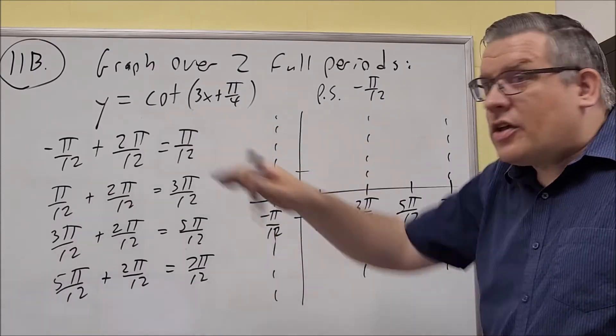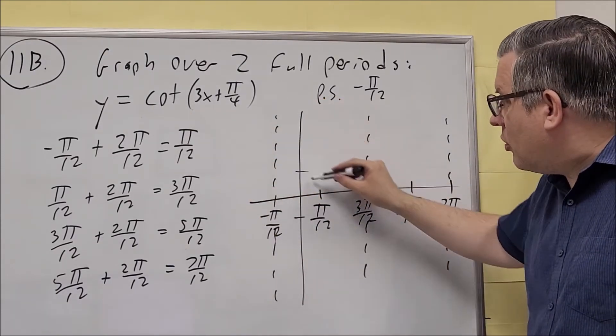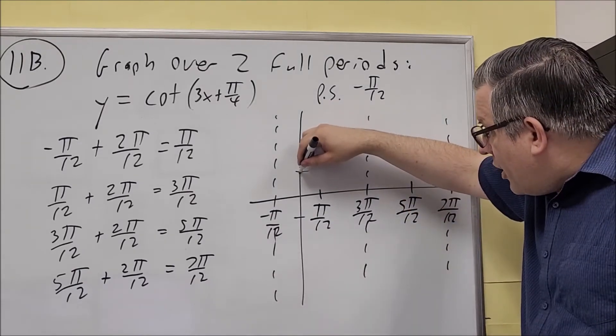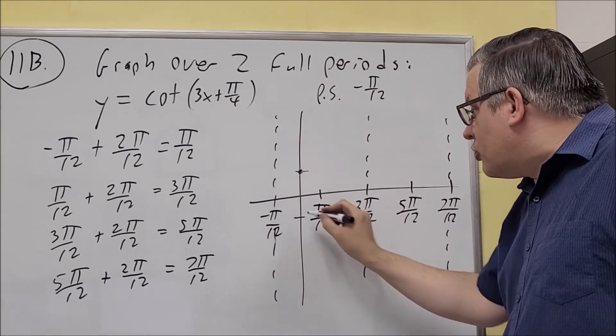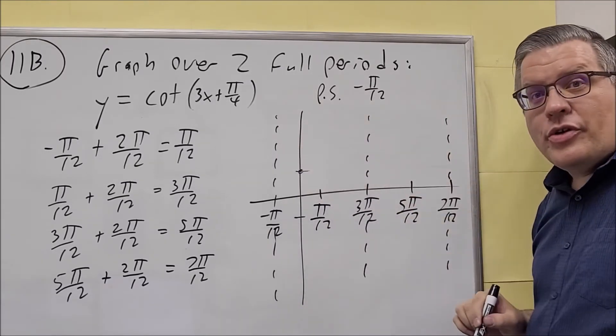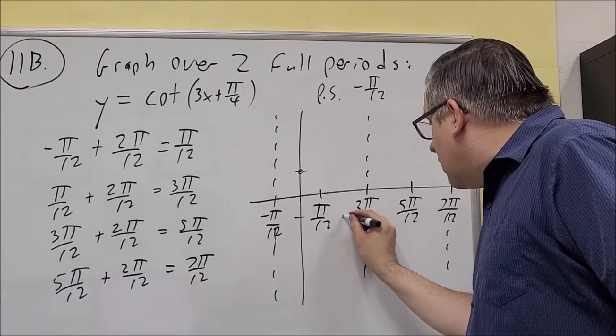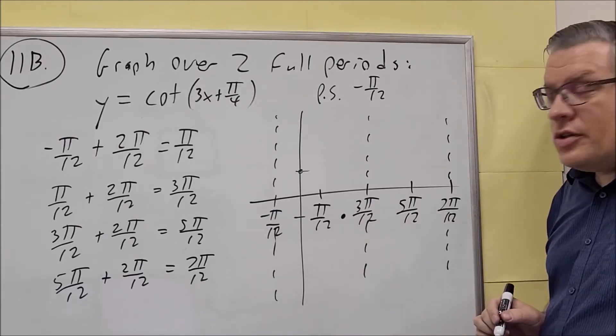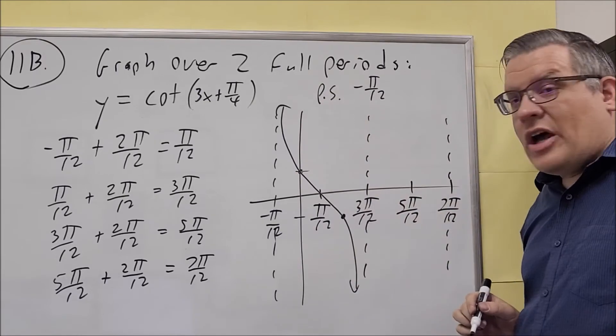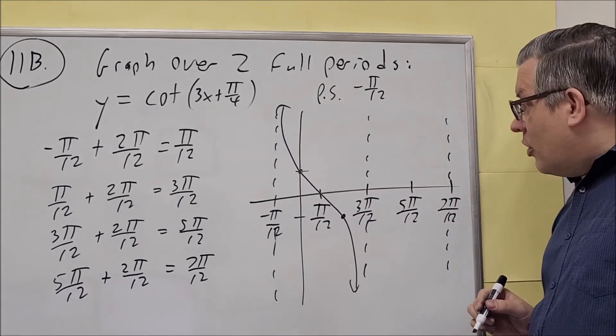Now cotangent graph, there's no negative in front, so this is going to fall as you go from left to right. So actually right here, that's the halfway point between negative π over 12 and π over 12, so the graph will cross through at 1 right there. And it's going to go through negative 1 down below, so the first 1 is going to look like this. That would be 1 period of that 1.